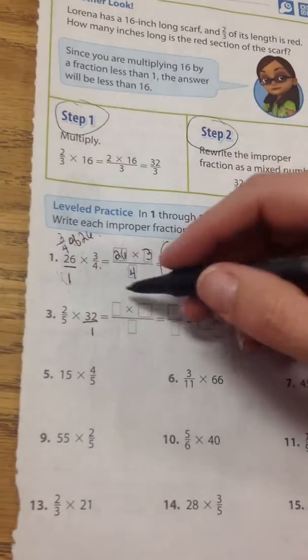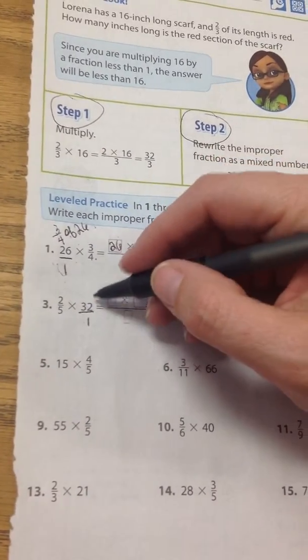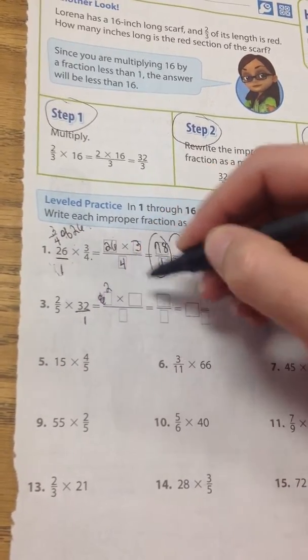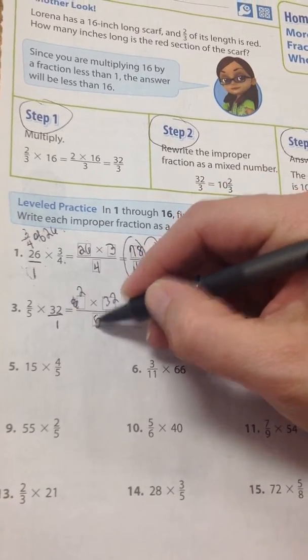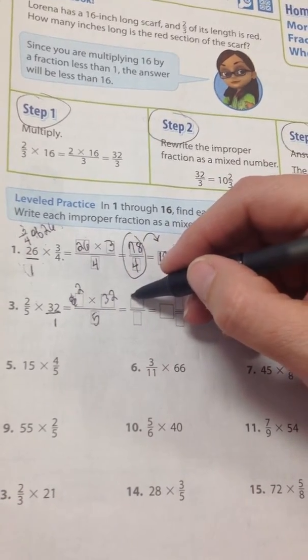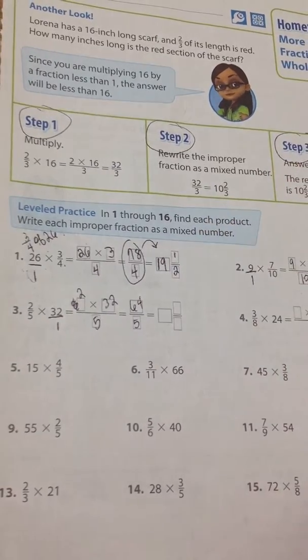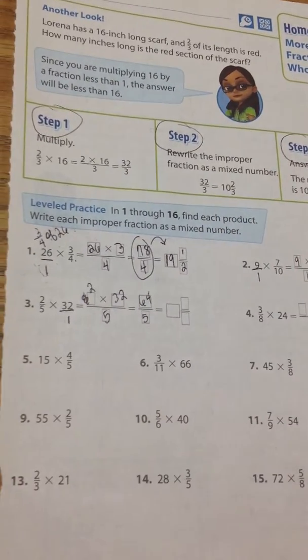Put the whole number over 1. Double 32 is 60, sorry. It'd be 2 times 32 all over 5, and that is 64 over 5. And we know that 5 does not go into 64 evenly.